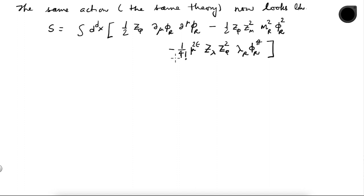That is how the same action looks when written in terms of phi_r. The physical content has not changed — I have just redefined fields, which does not alter the theory. If you were calculating some observable earlier using S you will get the same result. The only thing is that earlier you were getting infinities and now also the same — but as far as the theory is concerned, it is the same theory.